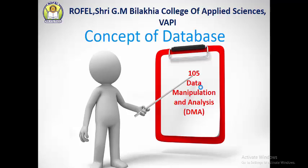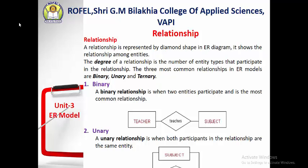Hello students, welcome to the classes of data manipulation and analysis in the concept of database. Today we learn some components of the ER diagram — entity relationship diagram or entity relationship model. The components include entities, attributes, and relationships. We already learned entities and attributes, so today we learn the relationship between entities.